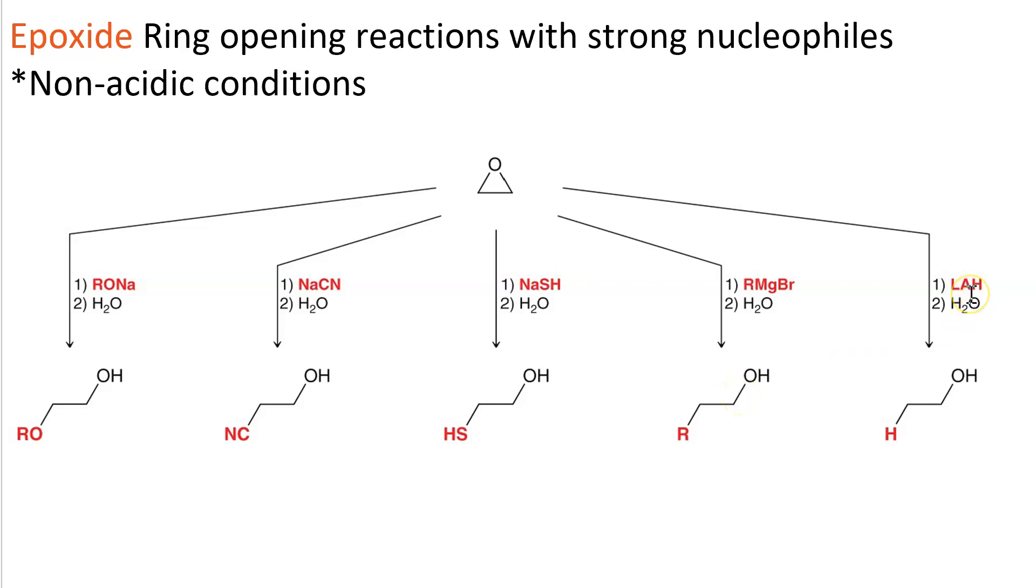And if we use a reducing agent like lithium aluminum hydride followed by water, and you could also use sodium borohydride for this, you get a hydrogen vicinal to an alcohol.